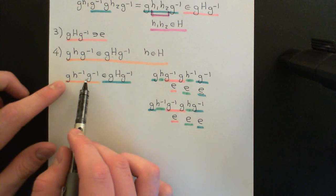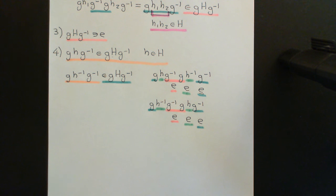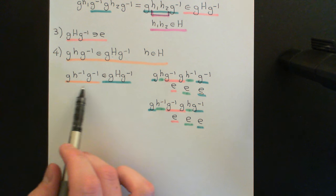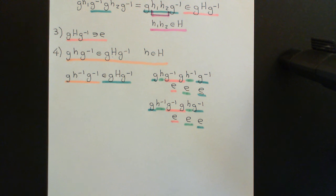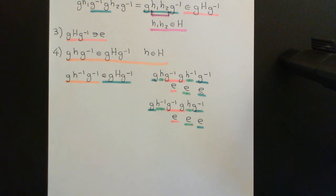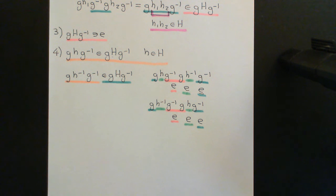This thing is the two-sided inverse, and it is an element of the conjugate of the subgroup capital H under the element little g. So this conjugate is closed under inverses and obeys axiom four — therefore it is a subgroup. That was an introductory video to the concept that you can conjugate a subgroup by another element little g of the larger group capital G, and end up with another subgroup. We are going to use this fact in future videos.